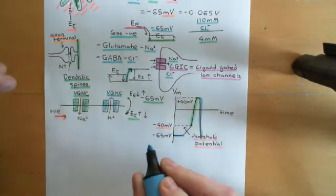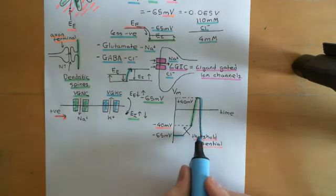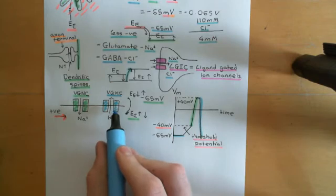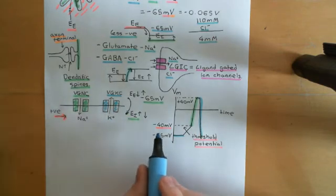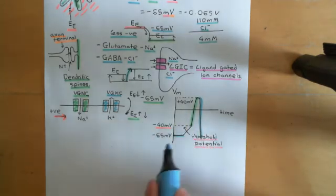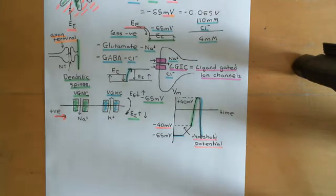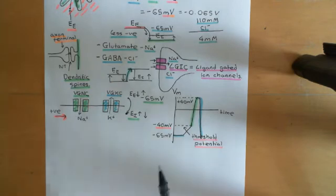Voltage-gated potassium channels also inactivate, and moreover, once you get back down to negative 65 millivolts, these voltage-gated potassium channels will start to actually go back into the closed state. You've gone back down below the negative 40 millivolts threshold potential, and therefore the voltage-gated potassium channels will start to close back down because the electrical potential difference across the cell membrane has returned to the more normal level, so they're no longer activated to be open. So you'll start to get voltage-gated potassium channels closing.